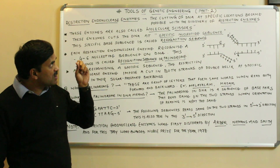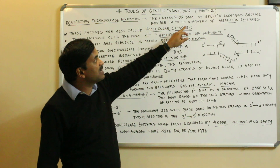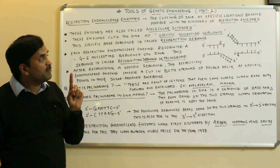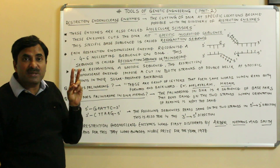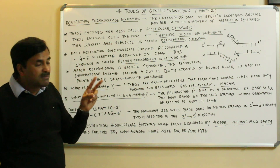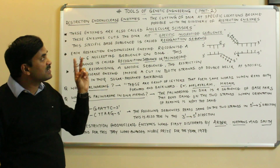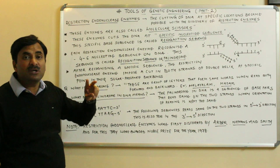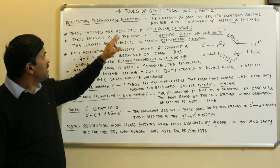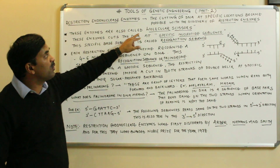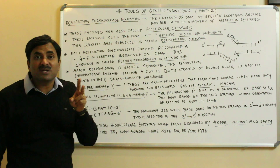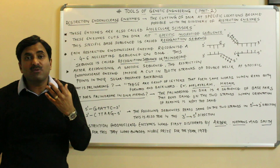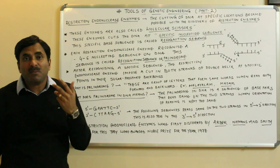They are called restriction endonucleases because the cutting of DNA at specific locations became possible with the discovery of these restriction enzymes. Because they have the capability to cut DNA at specific locations, they are also called molecular scissors — they are the scissors of biology — or they can be called molecular scalpels.